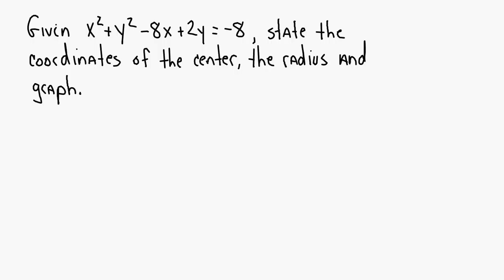The first thing you're going to do is rewrite this equation in a form closer to standard form. Write X squared paired with the minus 8X, leave a blank, plus Y squared paired with the 2Y, leave another blank, equals negative 8. Back in Algebra 1, you used a method called completing the square. These are the first two terms of a perfect square trinomial, and you complete it by halving the middle coefficient and squaring it.